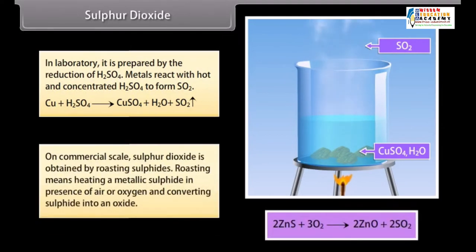On commercial scale, sulphur dioxide is obtained by roasting sulphides. Roasting means heating a metallic sulphide in presence of air or oxygen and converting sulphide into an oxide.